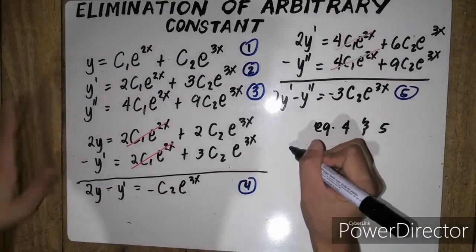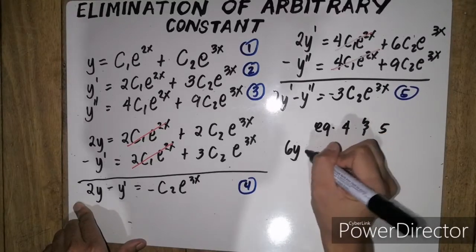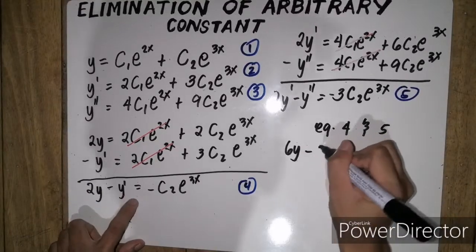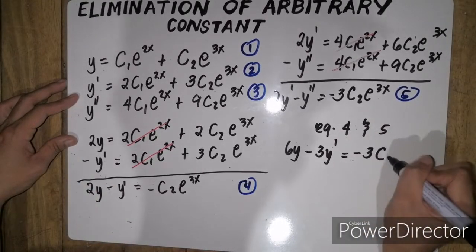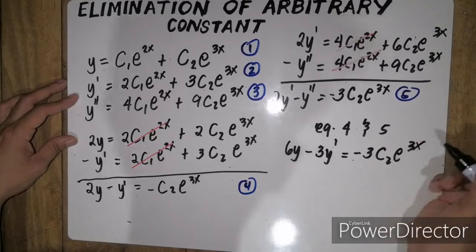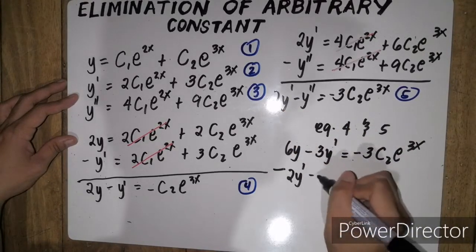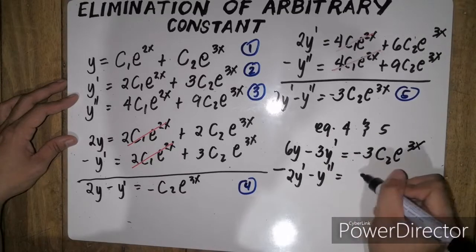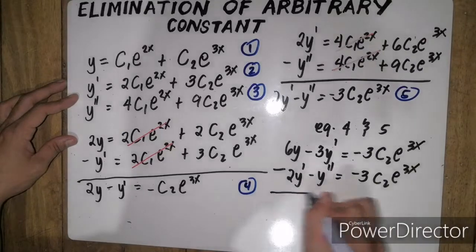So, we have, dito muna tayo sa equation number 4. So, 6y minus, multiply ito sa 3, 3y prime equals negative 3 c2e to the 3x. Ima-minus natin siya kay 2y prime minus y double prime equals negative 3 c2e to the 3x.